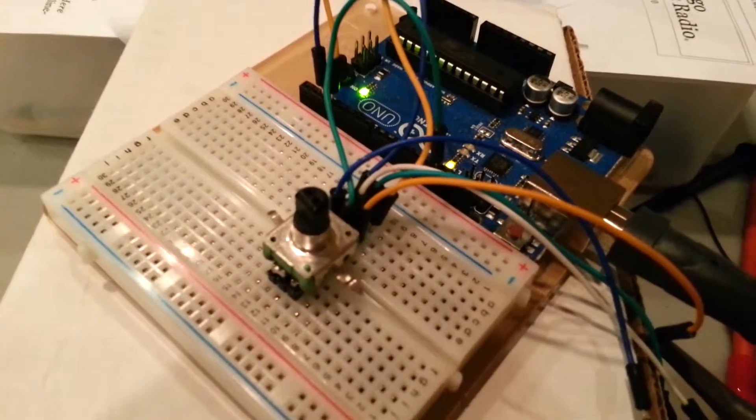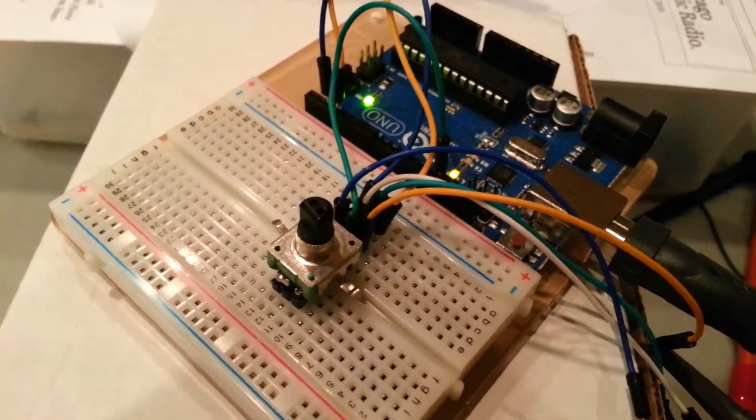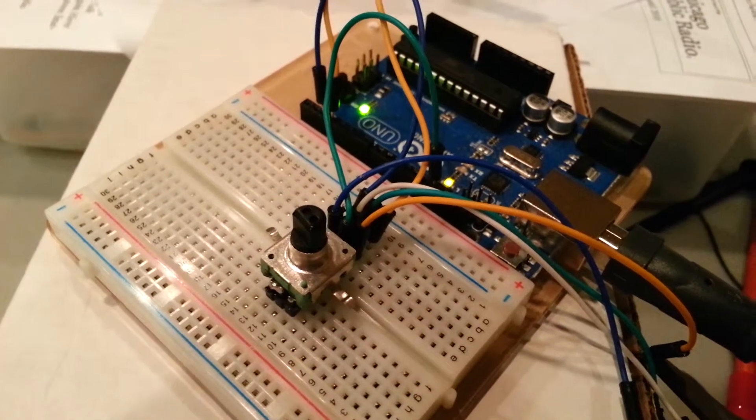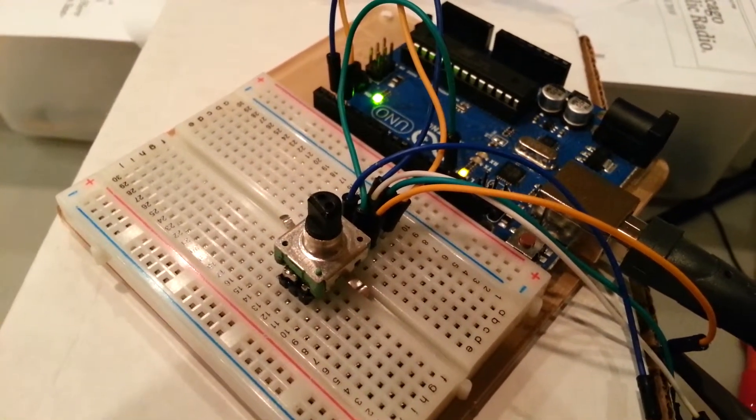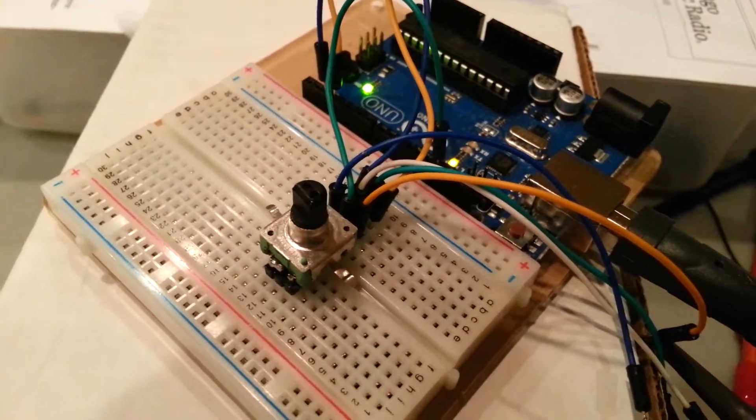We've got our rotary encoder here hooked up to an Arduino, which is right now just giving it power. So we're going to take a look at it on the scope.